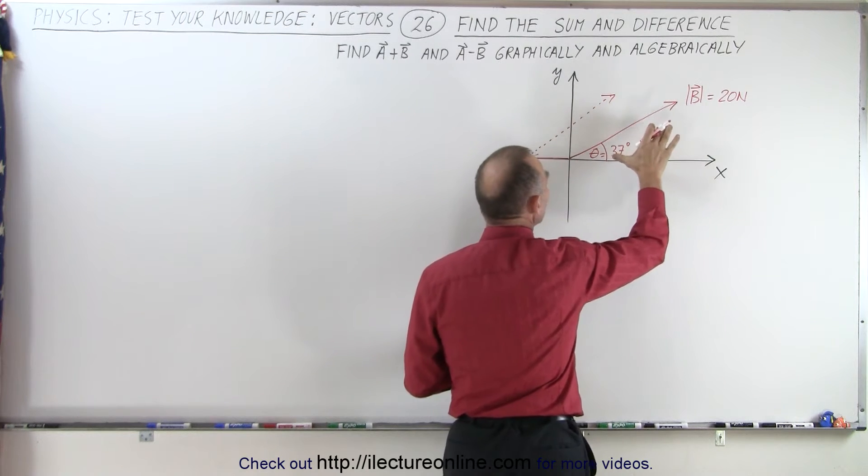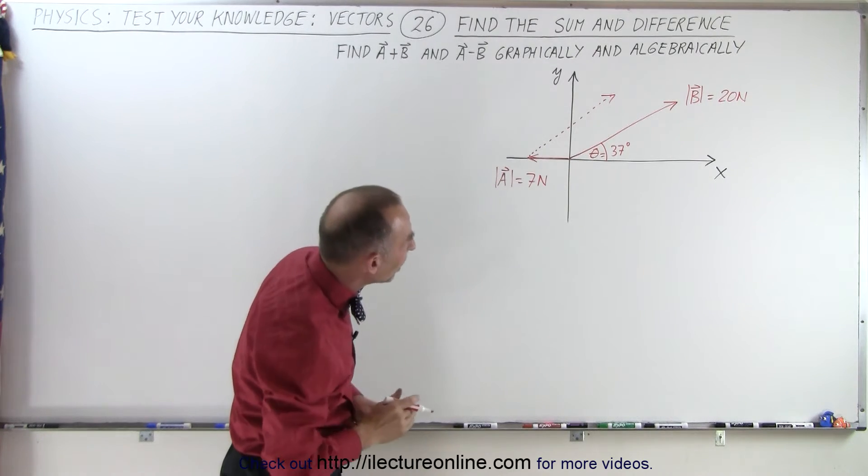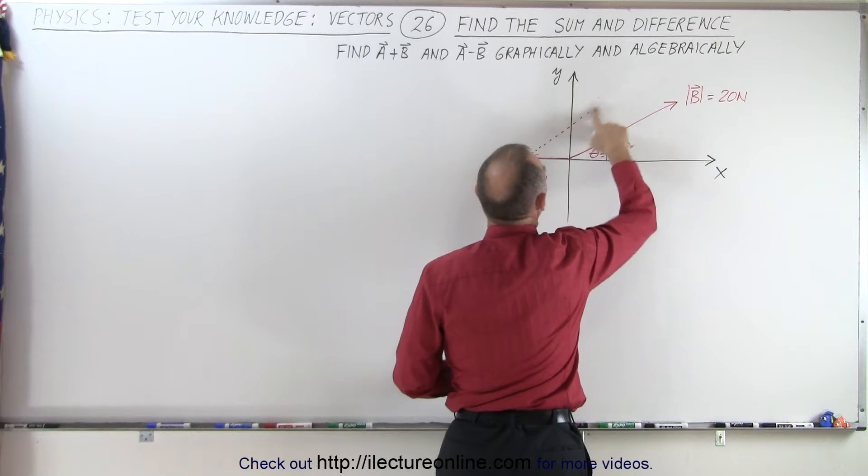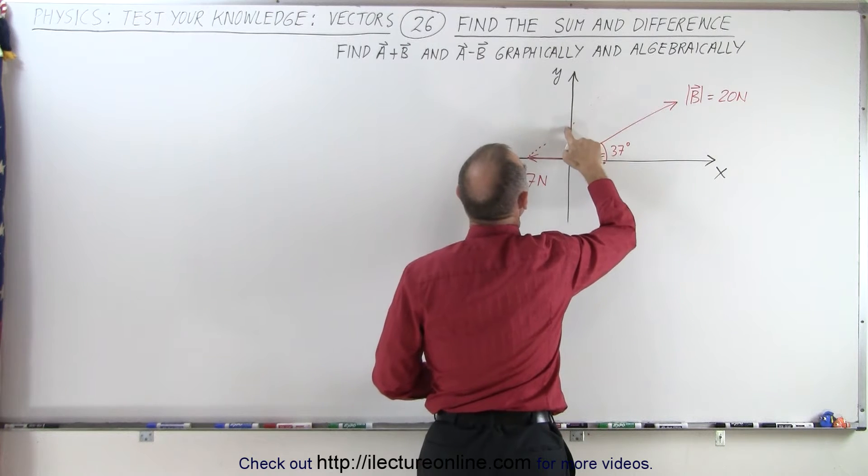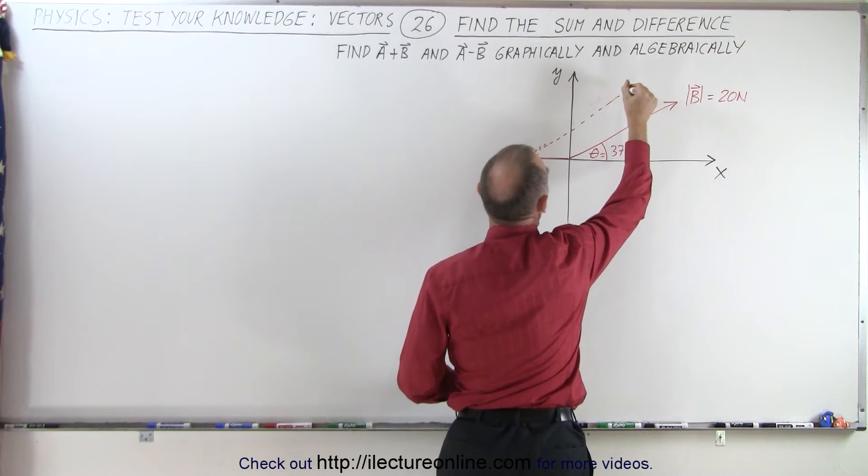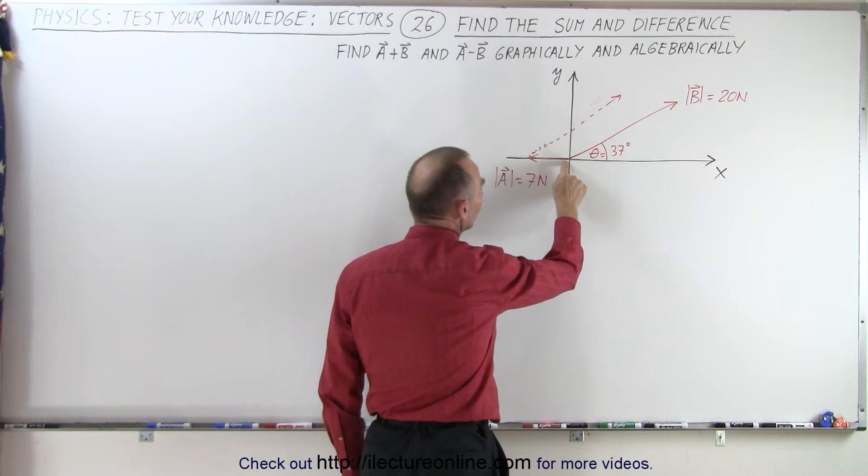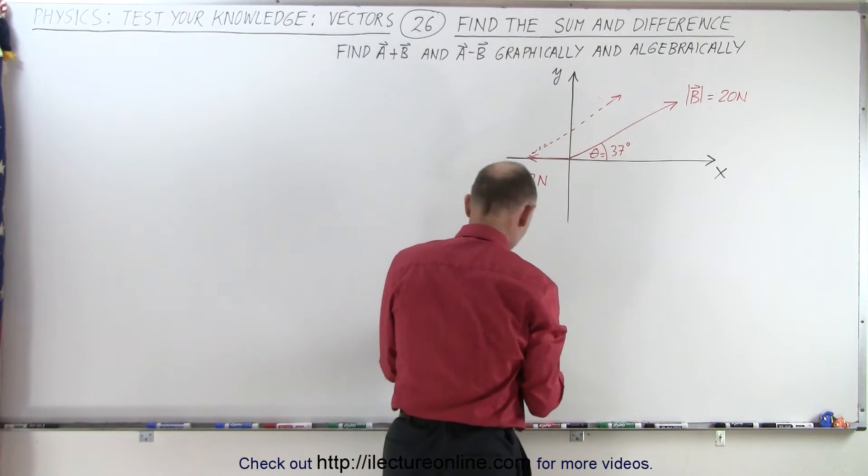Notice any vector can be moved to any position as long as you keep the length of the vector the same, the direction the same. Let me try to do a little bit better. I think it's more like this. There we go. And then the resultant vector will be from the tail of A to the tip of B.